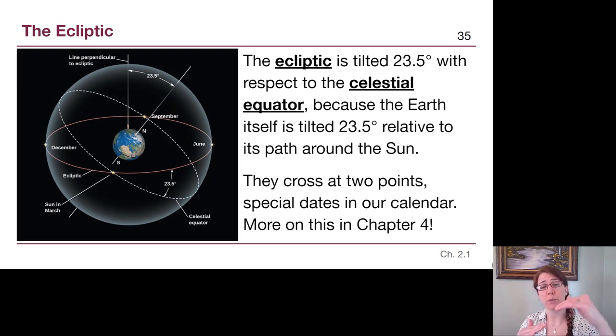The ecliptic is tilted with respect to the celestial equator because the earth itself is tilted as it goes around the sun. When we talk about the ecliptic, there are really two ways that we can define it. It is the path that the sun appears to make through our sky, and that would be the red line in our slide here. We see the sun has a little sun point at March, December, September, June, and all throughout the year it's somewhere along that red line. But the other way that we can describe the ecliptic is the path that the earth takes through the solar system. Because that plane, the motion that we're making around the sun is the reason why we see that different perspective from each of those different locations. The ecliptic and the celestial equator do cross at two different points on March 21st and September 21st. We will talk about those special dates in our calendar in chapter four.